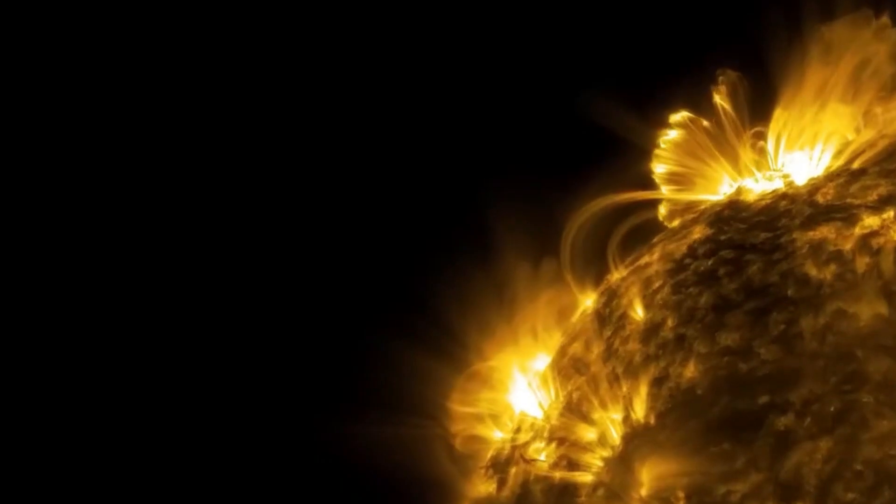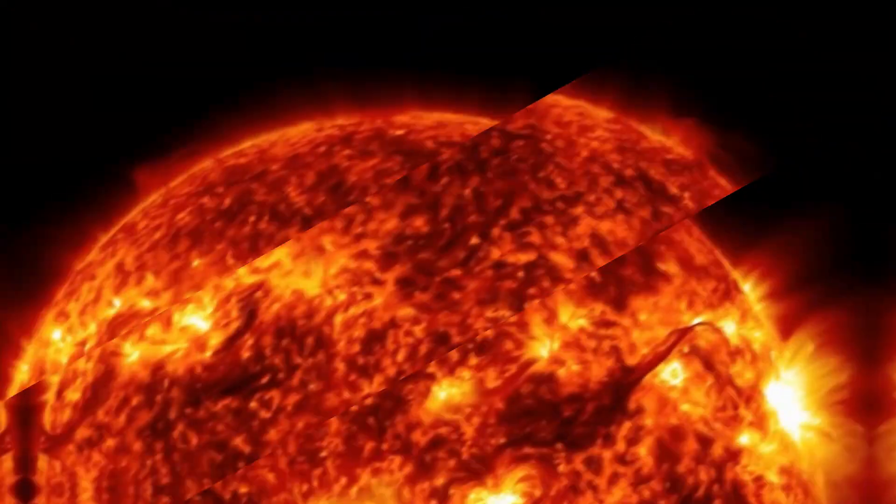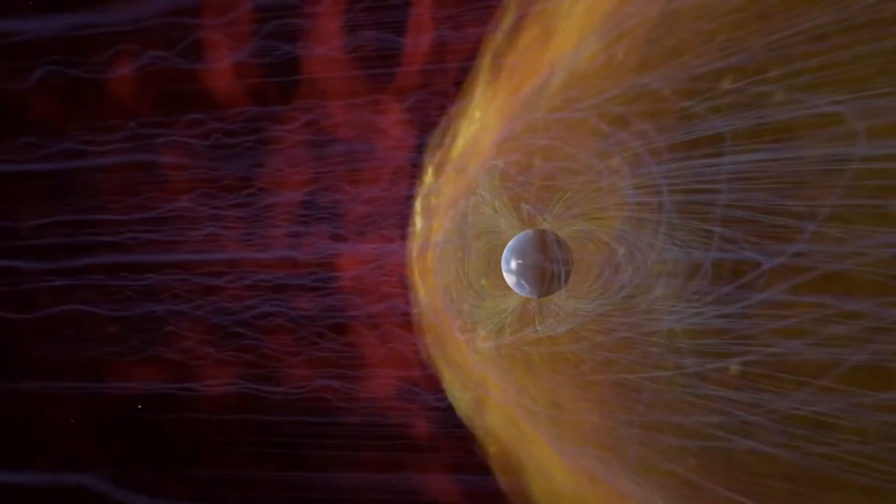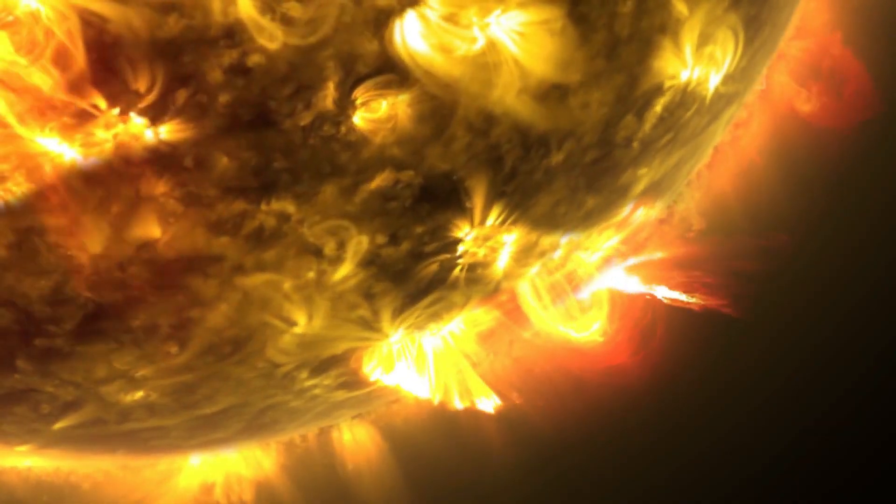Solar flares are not a monolith but a spectrum, classified from C to X based on their intensity. C-class flares are the solar system's gentle whispers, often unnoticed. M-class flares, more robust, can cause minor radio blackouts on Earth.